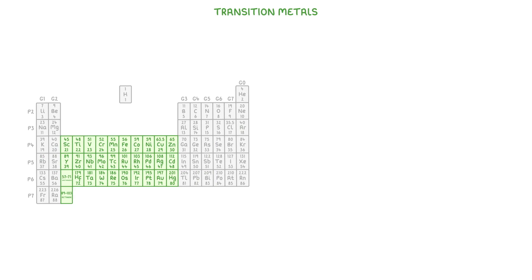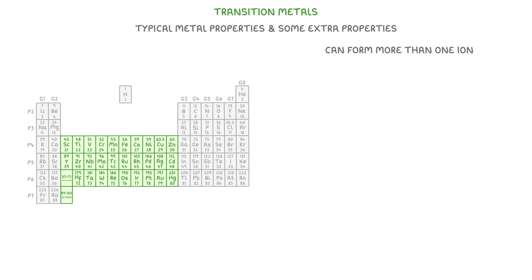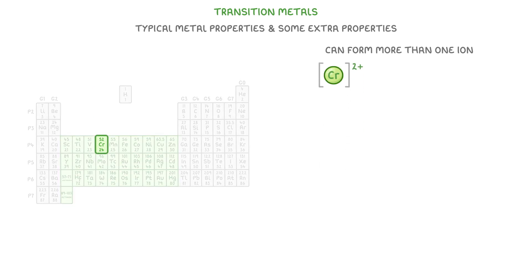Lastly, we have the transition metals, found in the centre of the periodic table, here in green. You can think of these as being typical metals, as they have all the metal properties we mentioned before. They also have some extra properties though. One of these is that transition metals can form more than one ion. For example, chromium can form 2+, 3+, and 6+ ions. And these transition metal ions are often coloured — for example, the aqueous forms of these ones would be blue, green, and orange.